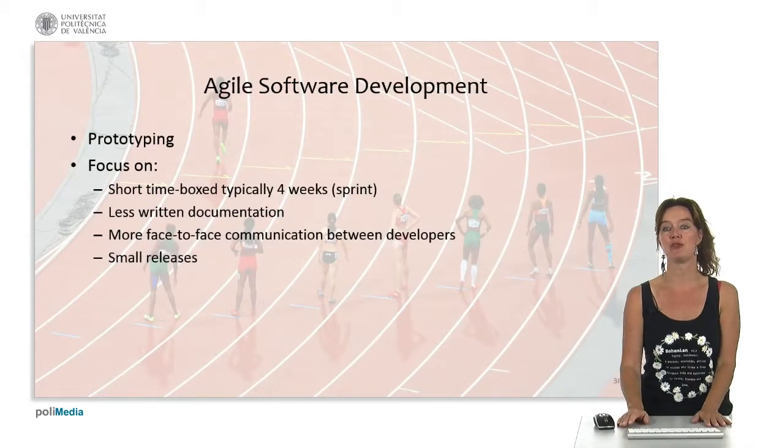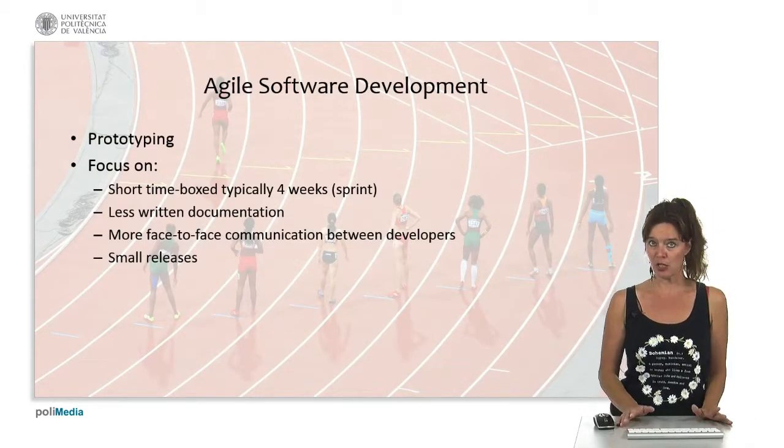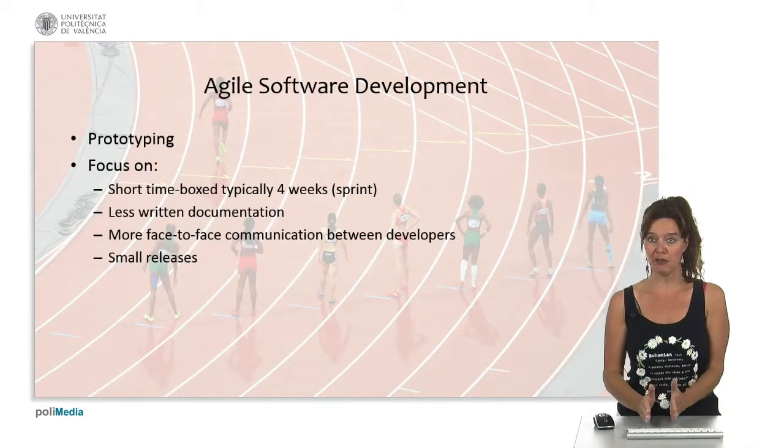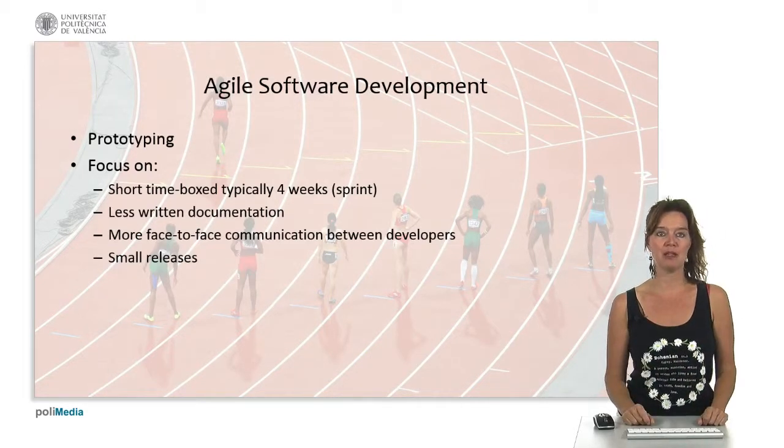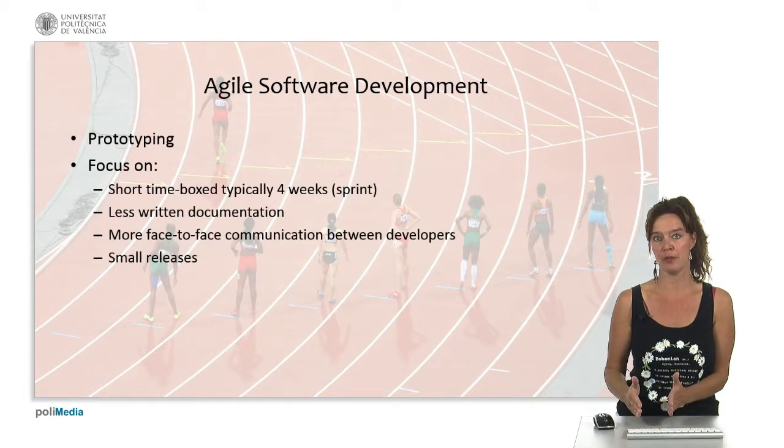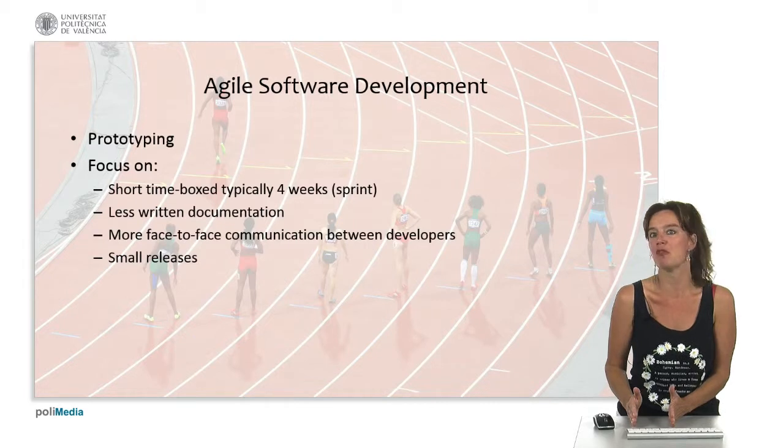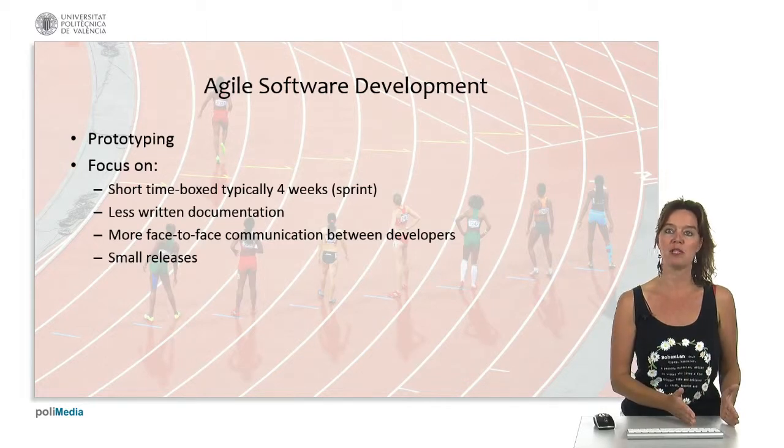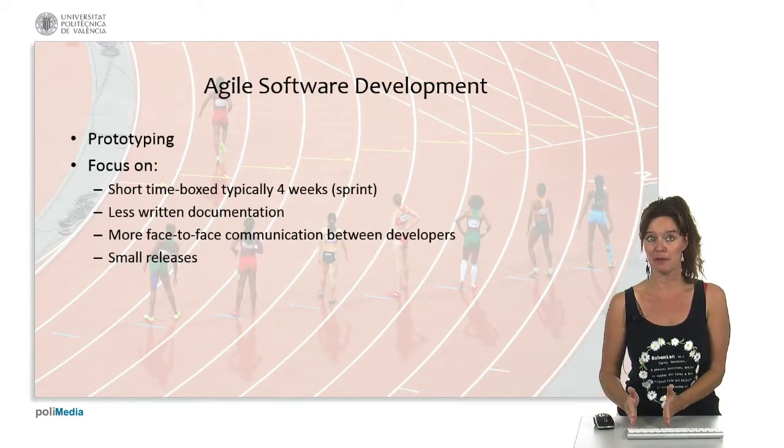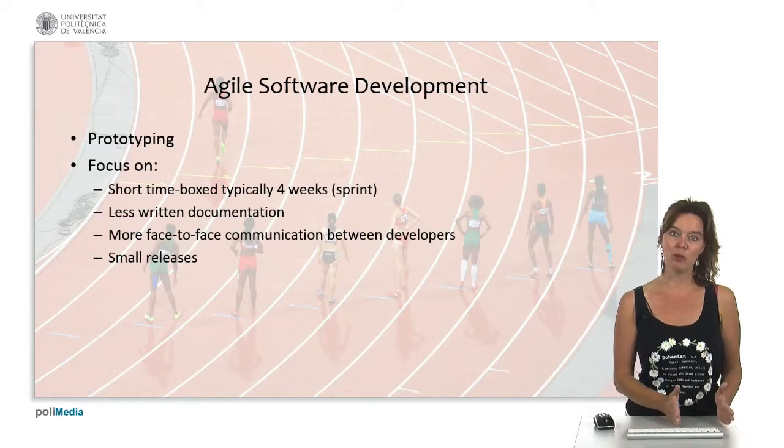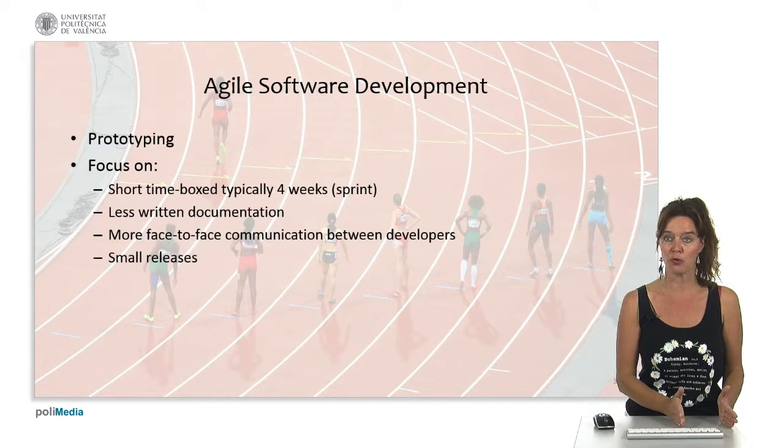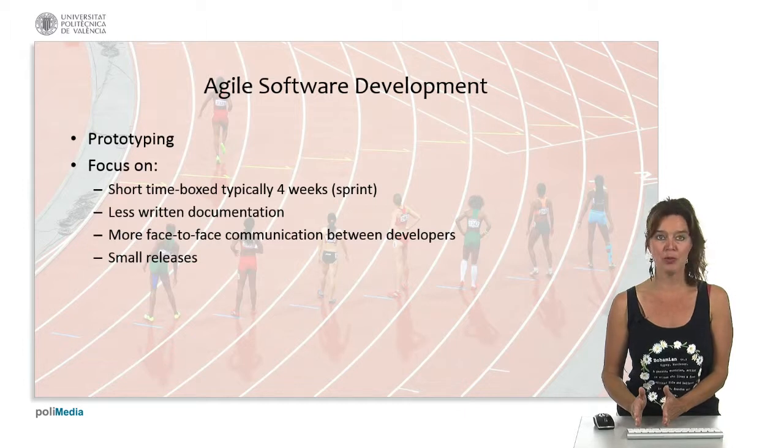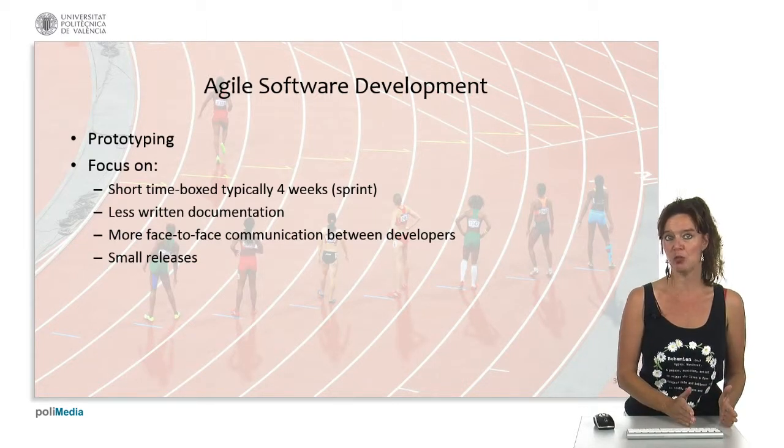Examples of prototyping is for example agile software development. Agile software development is a prototyping model in that it's incremental and it evaluates constantly. The focus in agile software development is on short timebox frames of development that are typically like four weeks. They're called sprints. So you make a sprint of four weeks to add functionality to the system and then we let the users evaluate. It's agile because since we have only four weeks, there's more emphasis on development and less on written documentation. In order to make up for this less written documentation, there should be more face-to-face communication between the developers.